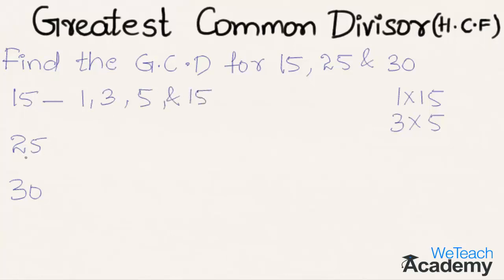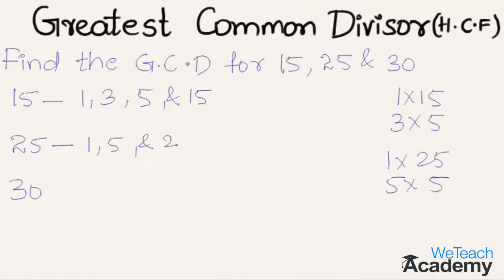Coming to the next number, 25. Here 25 can be written as 1 into 25, and it can also be written as 5 into 5. So factors for 25 are 1, 5, and 25 itself.